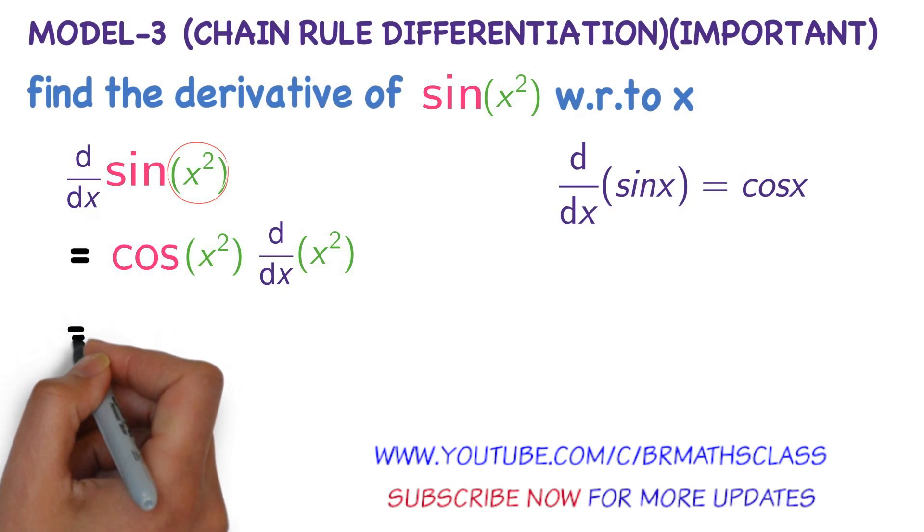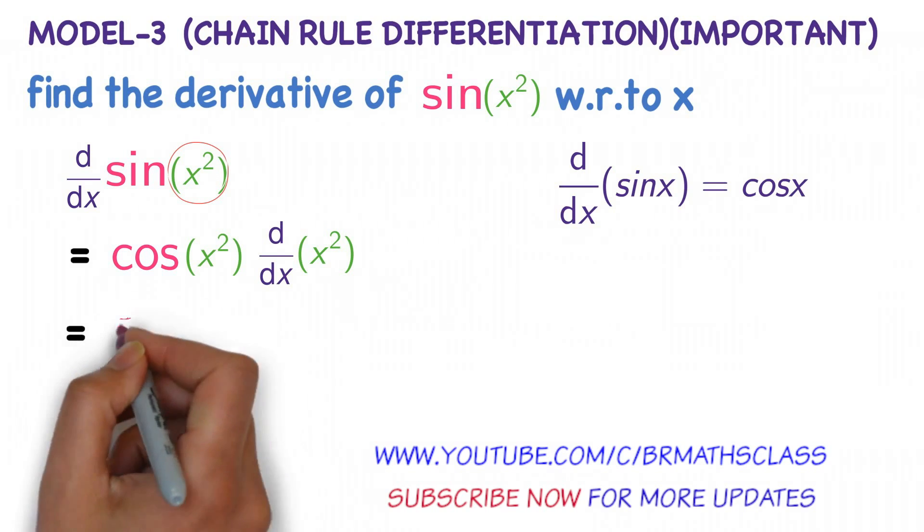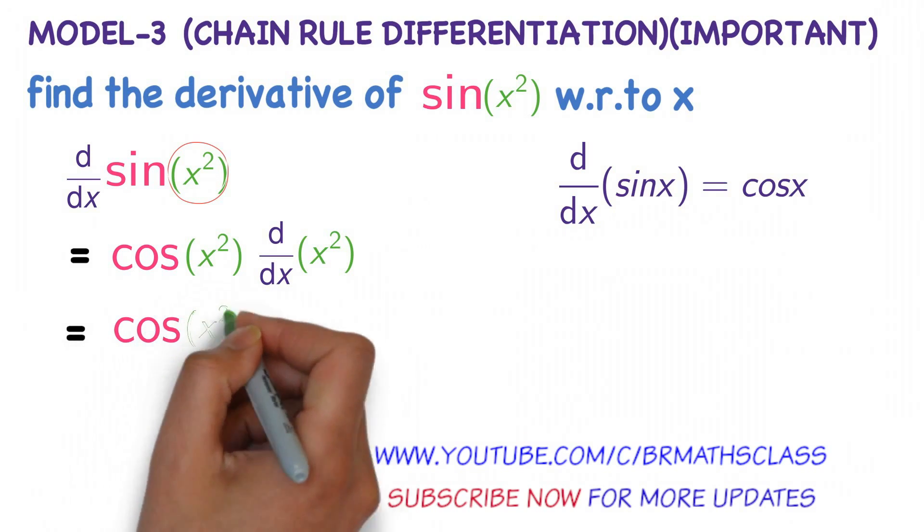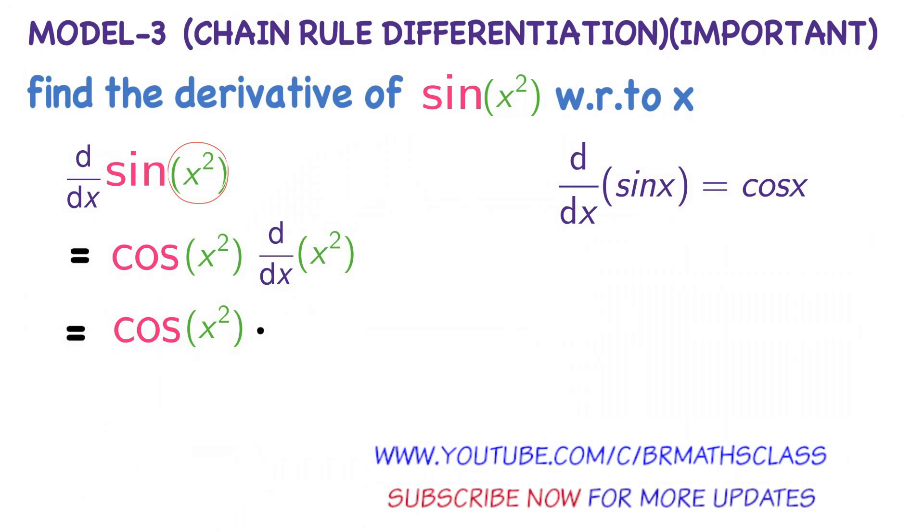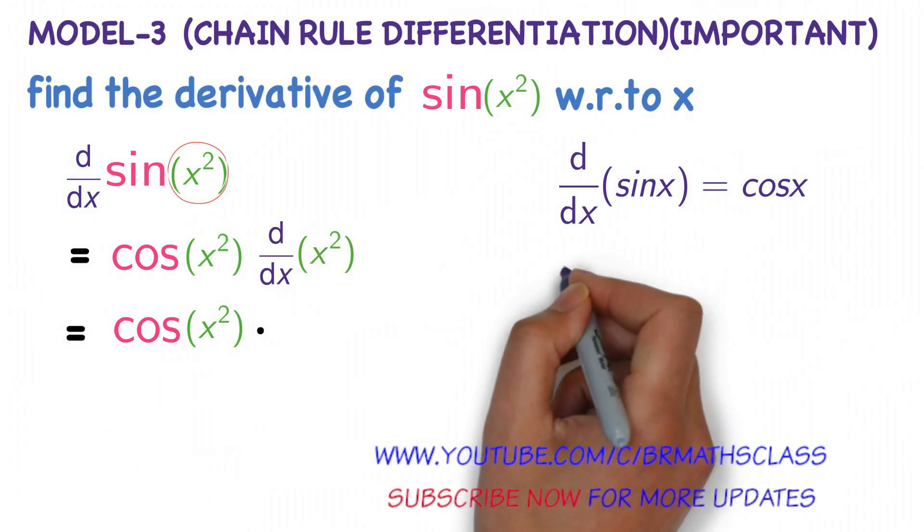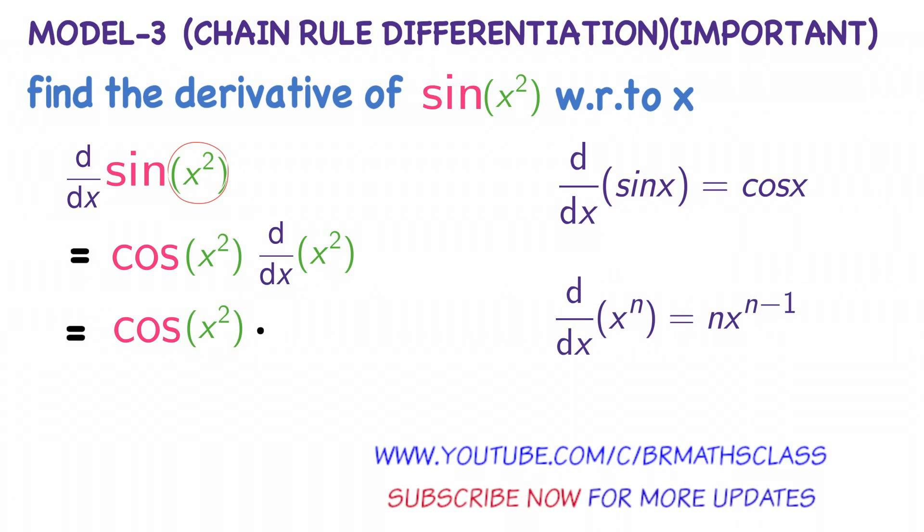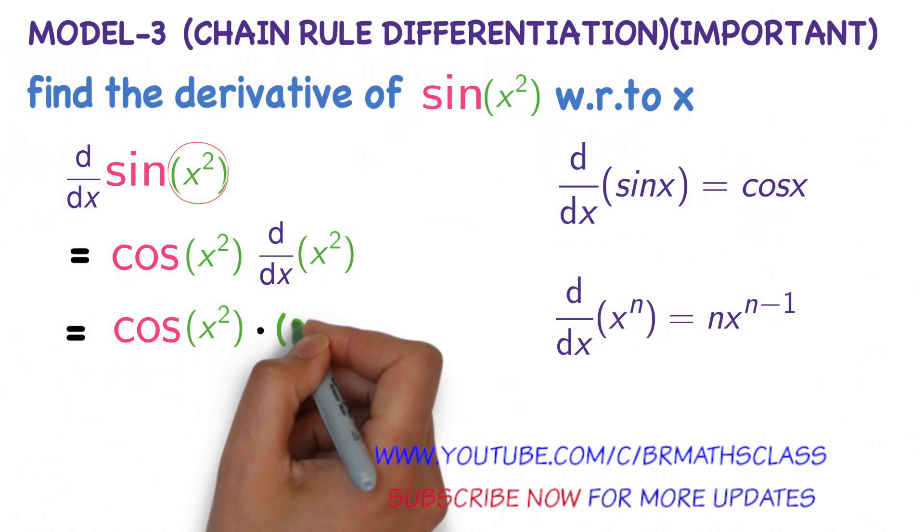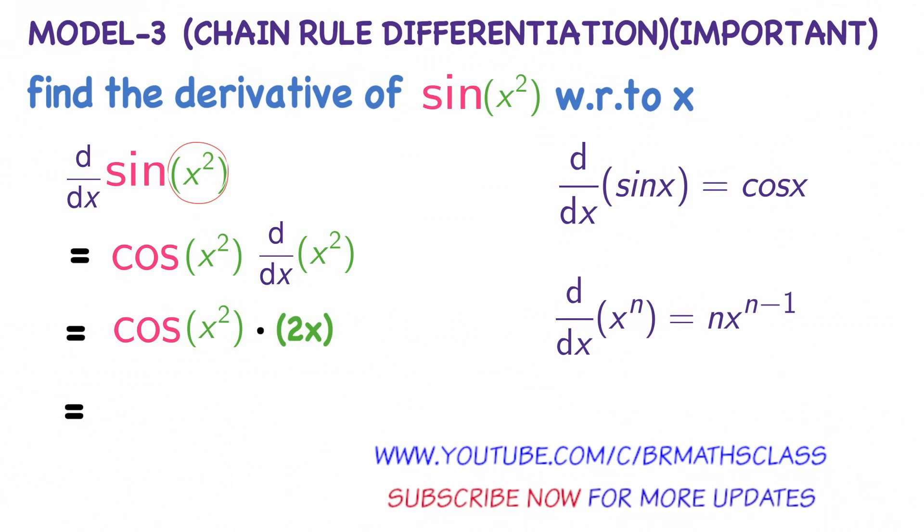Now, cos(x²) times derivative of x². We know this formula: derivative of x^n is n times x^(n-1). We already done this type of problems. Derivative of x² is 2x.